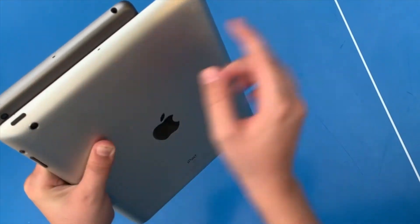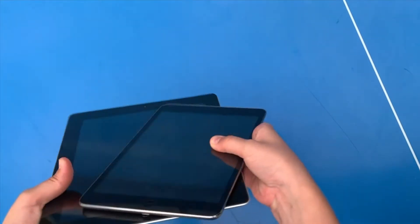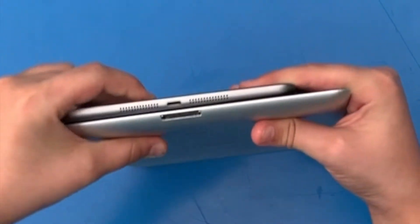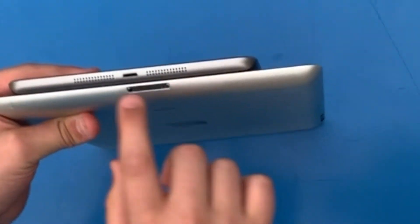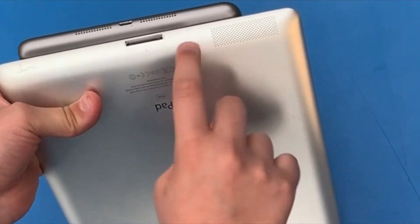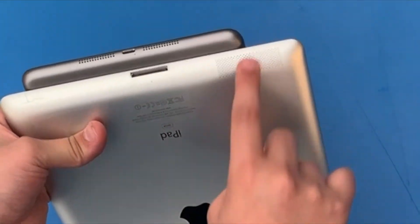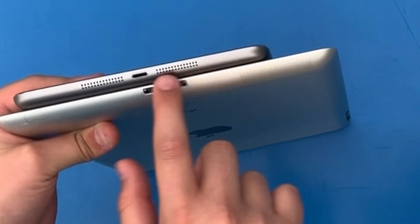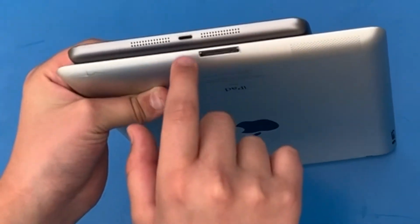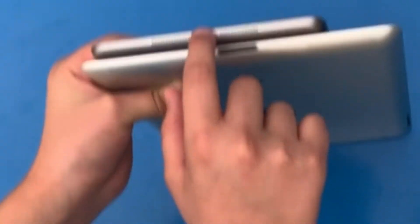What we can see on the bottom is that the iPad mini has little speakers on the side and a smaller charging port, while the iPad has bigger speakers and the port is here. Now let's move to the camera comparison.